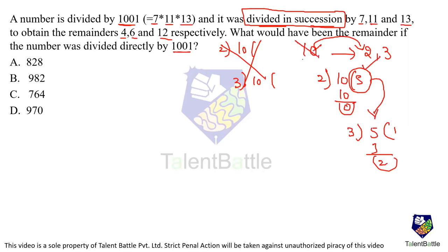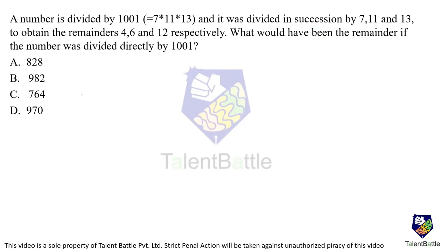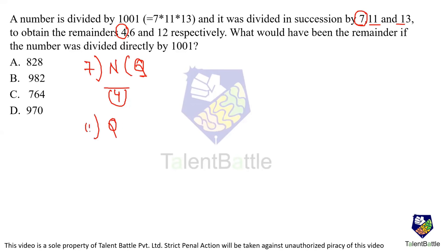Using the concept N = divisor × quotient + remainder: N = 7q + 4; q = 11q₁ + 6; q₁ = 13q₂ + 12. Substituting gives N = 1001·q₂ + remainder. The main procedure is lengthy, so here is a shortcut. Write the divisors and their remainders in order: (7, 4), (11, 6), (13, 12).